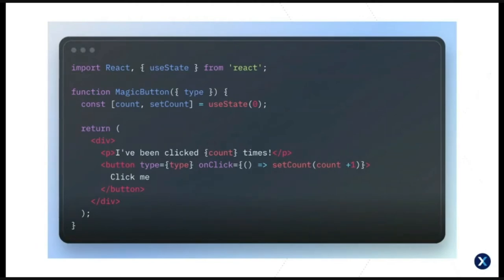Let's jump back to our magic button component and see it rewritten as a functional component using React hooks. The first thing you'll notice is it's not a class, but it's functionally the same as the class component — we're passing in a type prop, we still have our state tracking the number of clicks, and we have a button with an onClick event, then we return some markup. This brings us to the first hook: useState. We're creating a count constant and a setCount function by calling useState with a default state of zero. Count should only ever be read — to update state we use setCount so React knows when to re-render.